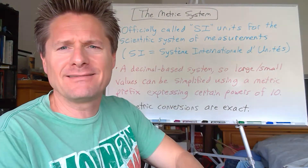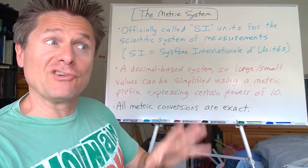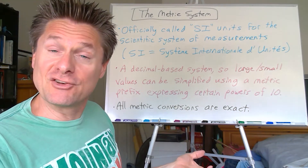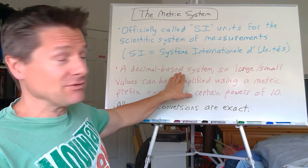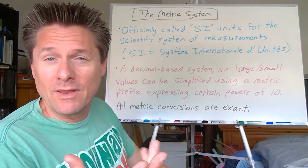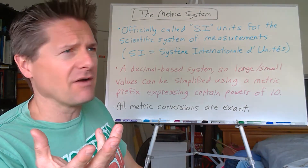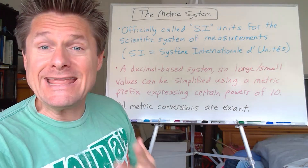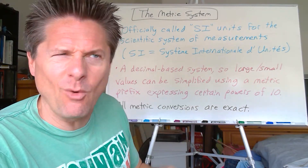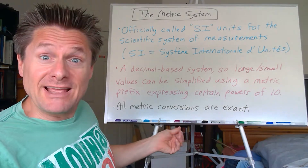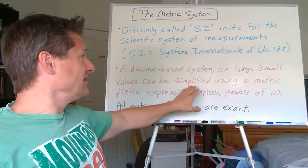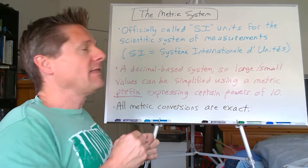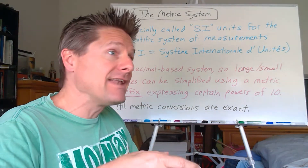We have SI units for length, mass, temperature, et cetera. What we love about this versus the English system — 12 inches per foot, 5,280 feet per mile, things you have to memorize that don't make a lot of sense — is that the metric system is decimal-based. Kind of like the American monetary system with 100 cents per dollar and 10 cents per dime — very easy to figure out. We can take really large or small values and simplify them like scientific notation, but instead use a metric prefix that expresses powers of 10. For example, kilo is 10 to the third.